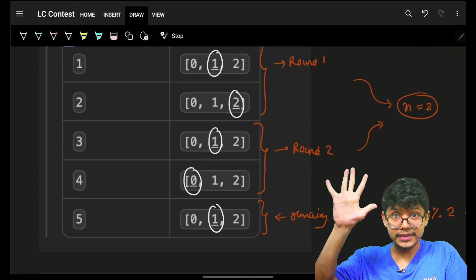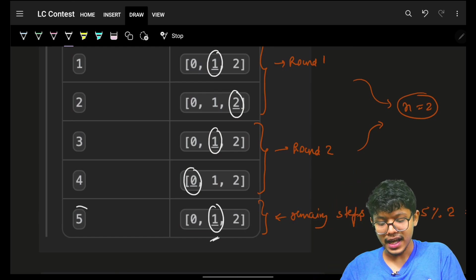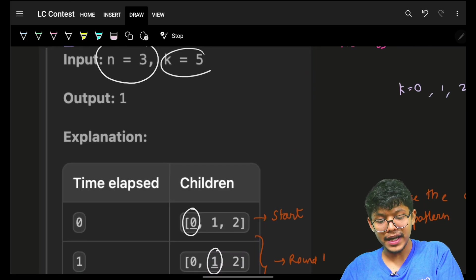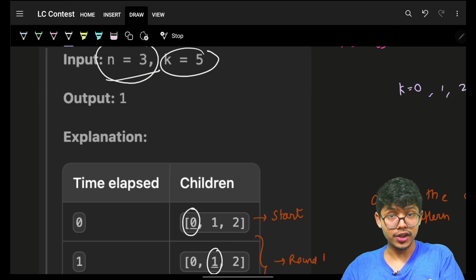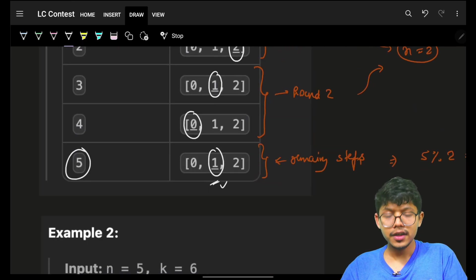Next second, child 1. And thus, at the end of k equal to 5 seconds, if I have 3 children, it will be with the first child, as in the child with the number 1.